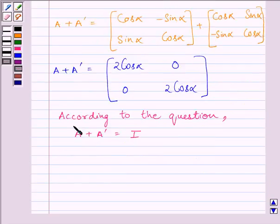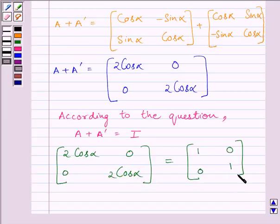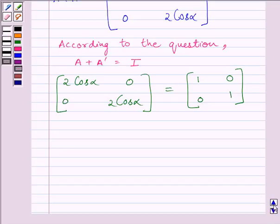According to the question, A plus A transpose is equal to I. So the matrix [2 cos alpha, 0; 0, 2 cos alpha] must be equal to the identity matrix [1, 0; 0, 1]. This can only be possible if 2 cos alpha is equal to 1, or cos alpha is equal to 1 upon 2.